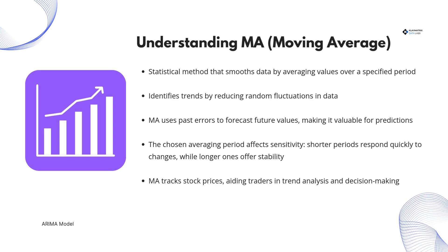Now let's discuss the moving average, or MA, component. Unlike a simple moving average, which smooths data by averaging values over a period, ARIMA's moving average model uses past forecast errors to improve future predictions. The length of the averaging period determines sensitivity: shorter periods react quickly to changes, while longer periods provide more stability. This method is widely used in stock market analysis, where tracking past price movements helps traders make better investment decisions.